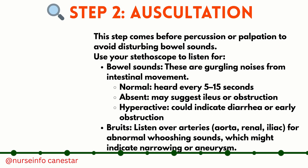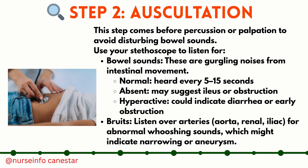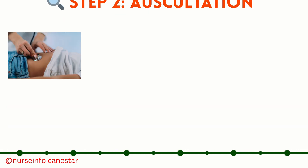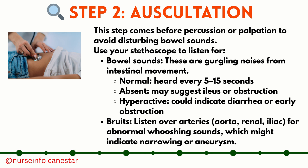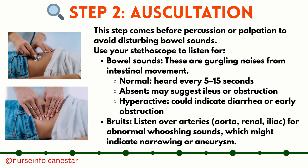Step two: auscultation. This step comes before percussion or palpation to avoid disturbing bowel sounds. Use your stethoscope to listen for bowel sounds — gurgling noises from intestinal movement. Normal sounds are heard every 5 to 15 seconds; absent sounds may suggest ileus or obstruction; hyperactive sounds could indicate diarrhea or early obstruction. Also listen over arteries — the aorta, renal, and iliac — for abnormal whooshing sounds (bruits), which might indicate narrowing or aneurysm.